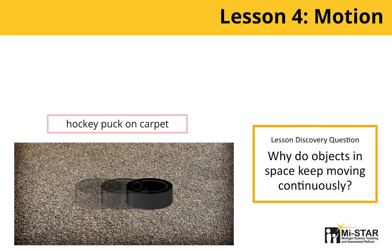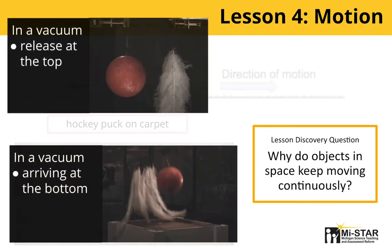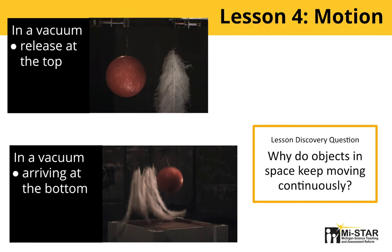Lesson 4 is about motion. It addresses why space objects keep moving continuously without stopping — contrary to what students observe in their everyday lives, where objects always tend to slow down and come to rest. There are three uncover-share phases to scaffold student learning. First, students conduct an investigation observing a hockey puck sliding on different surfaces to explore how the surface affects the distance the puck travels. Next, they create force models of the puck in motion. In the third uncover-share, students watch video showing a bowling ball and feathers being dropped in air and then in a vacuum chamber to consider the difference in forces acting on the objects. These experiences are all used in the connect phase to help students construct explanations for the motion of Earth and the asteroid in space.